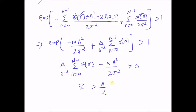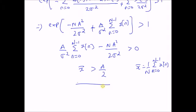Upon further simplification, this test becomes x̄ > A/2, since x̄ = (1/N) times the sum from n=0 to N−1 of x(n), which is the sample mean. This is the detection test that will have minimum probability of error.